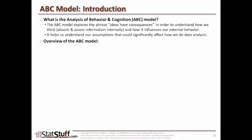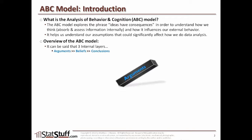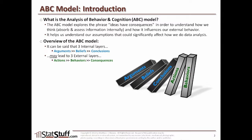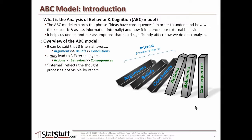There are three internal layers: arguments that lead to beliefs that could lead to conclusions. Those may then lead to three external layers: actions, behaviors, and consequences. Each of these is ABC, and ABC is an easy way to remember these different layers.